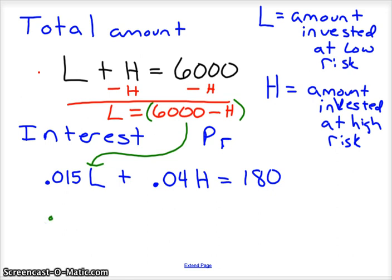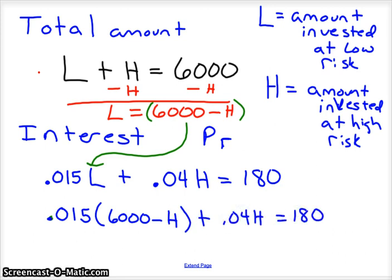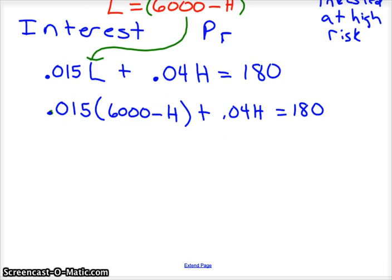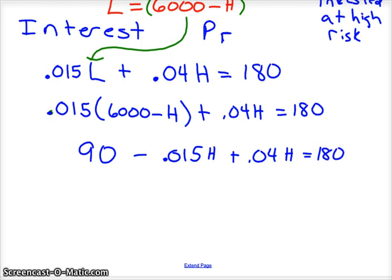So our new equation is 0.015 times 6,000 minus H plus 0.04H equals $180. And so back to 8th grade again, start distributing through. 0.015 times 6,000 is 90 minus 0.015H plus 0.04H equals 180. So that's all I did was distribute through and we've got a new equation.